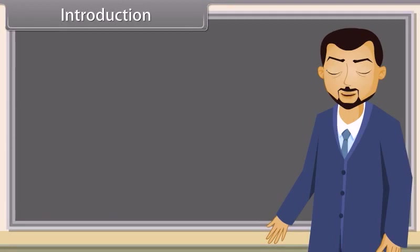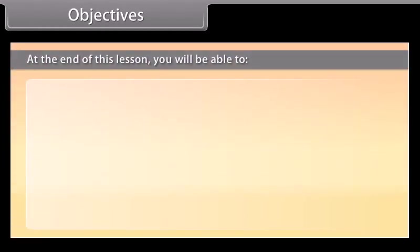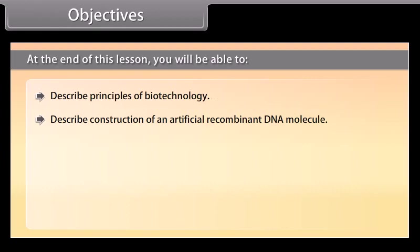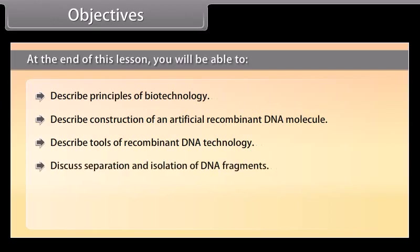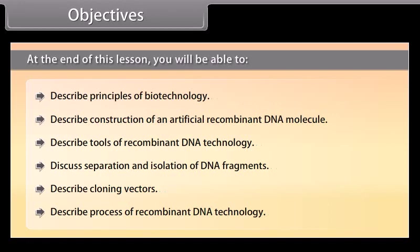In this lesson, you will learn the principles and processes of biotechnology. At the end of this lesson, you will be able to: describe principles of biotechnology, describe construction of an artificial recombinant DNA molecule, describe tools of recombinant DNA technology, discuss separation and isolation of DNA fragments, describe cloning vectors, and describe the process of recombinant DNA technology.